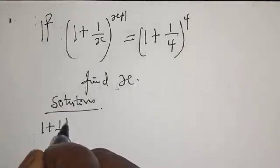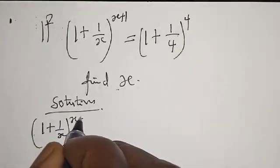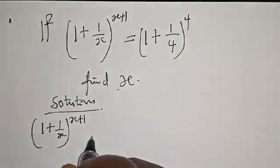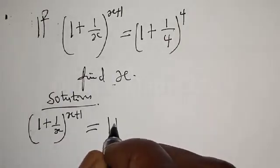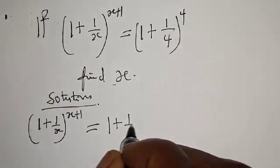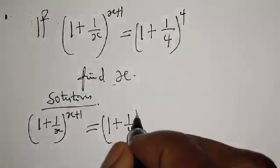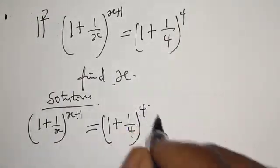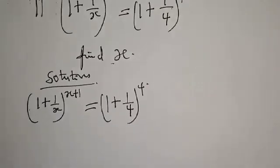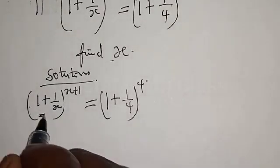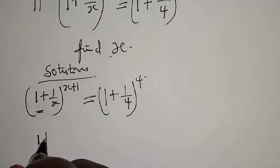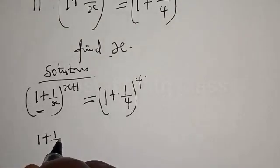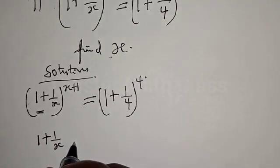Solution. We have 1 plus 1 over x, raised to the power x plus 1, to be equal to 1 plus 1 over 4, raised to the power 4. Now let's consider what we have in the bracket first. We have 1 plus 1 over x.